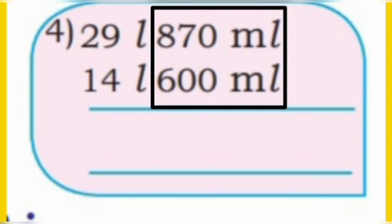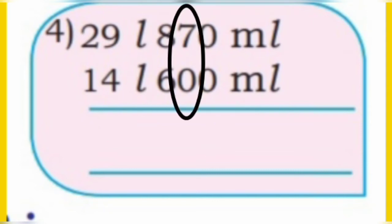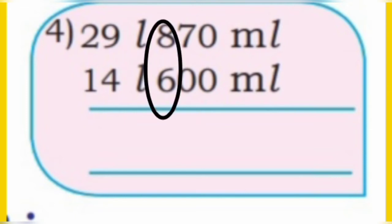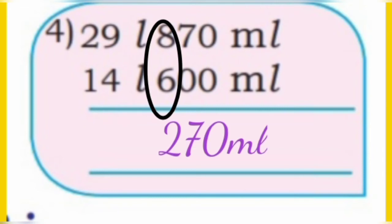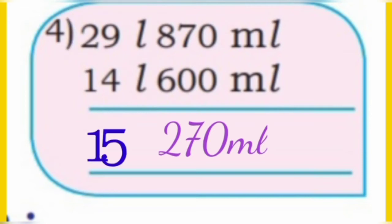Fourth one: 29 litre 870 milliliter minus 14 litre 600 milliliter. First we subtract milliliter from milliliter. Unit place: 0 minus 0, write in unit place. 7 minus 0 is 7, write in 10th place. 8 minus 6 is 2, write in 100th place. Now subtract liters from liters: 9 minus 4 is 5, and 2 minus 1 is 1. So answer is 15 liter 270 ml.